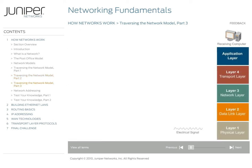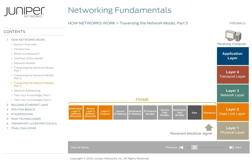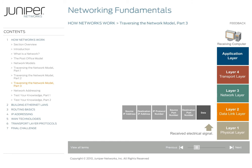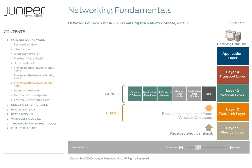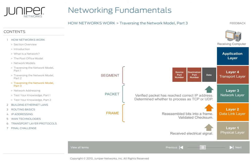Once the data arrives at the destination computer, it travels up the stack with each layer examining and removing the headers and trailers added by the corresponding layer on the source computer. The physical layer sends the bits up to the data link layer, where they are reassembled into a frame. The data link layer verifies the checksum and removes the layer 2 frame, then sends the packet up to the network layer. The network layer examines the layer 3 destination address and verifies that the packet arrived at the correct destination. Next, it examines the protocol number to determine the transport layer protocol, strips off the layer 3 header, and sends the data up to the appropriate transport layer protocol.